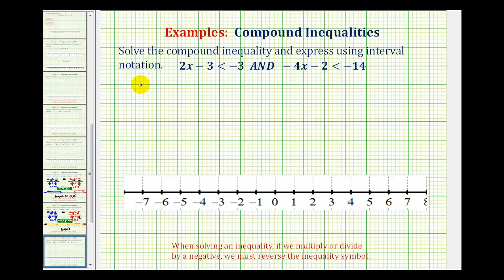We'll first solve the inequality 2x minus 3 is less than negative 3, and then we'll solve negative 4x minus 2 is less than negative 14. Again, these are connected by the word AND, which also means intersection. That will be helpful in the end when we try to find the intersection of the two intervals.